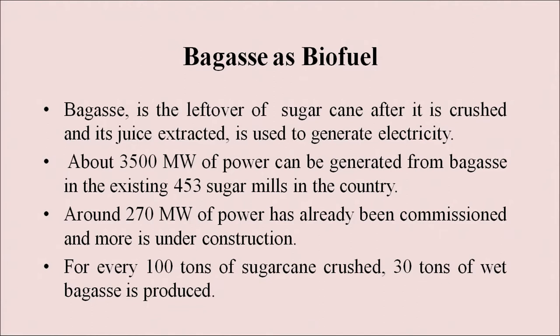Bagasse as biofuel: bagasse is the leftover of sugarcane after it is crushed and its juice extracted, and it is used to generate electricity. About 3500 megawatts of power can be generated from bagasse in the existing 453 sugar mills in the country. Around 270 megawatts of power has already been commissioned and more is under construction. For every 100 tons of sugarcane crushed, 30 tons of wet bagasse is produced.